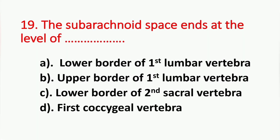Question number 19. The subarachnoid space ends at the level of? Option A: Lower border of first lumbar vertebra. Option B: Upper border of first lumbar vertebra. Option C: Lower border of second sacral vertebra. Option D: First coccygeal vertebra. The answer is Option C, lower border of second sacral vertebra.